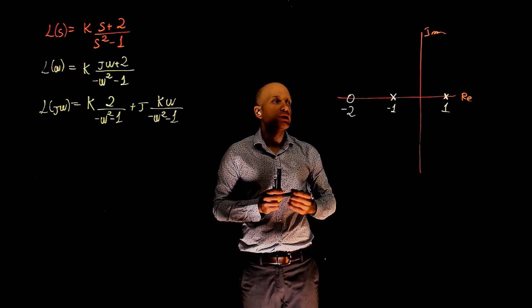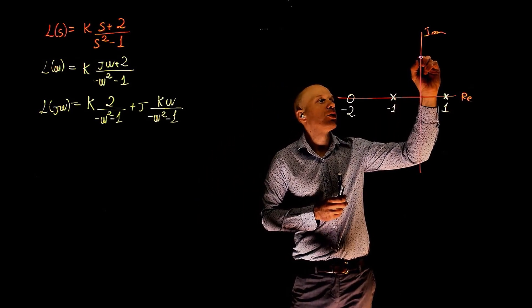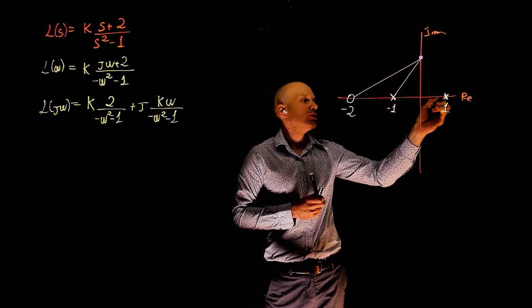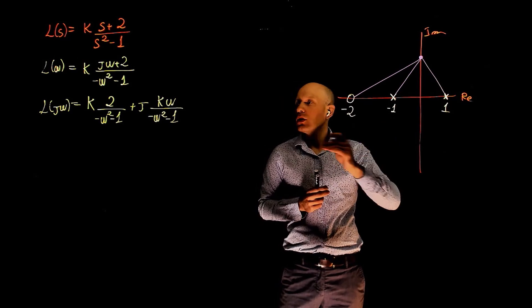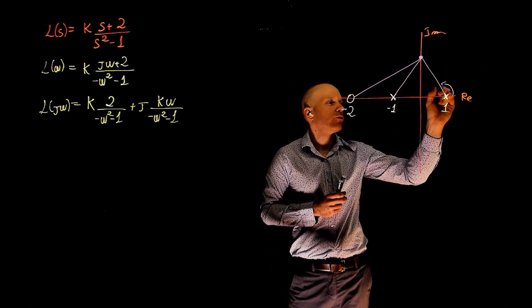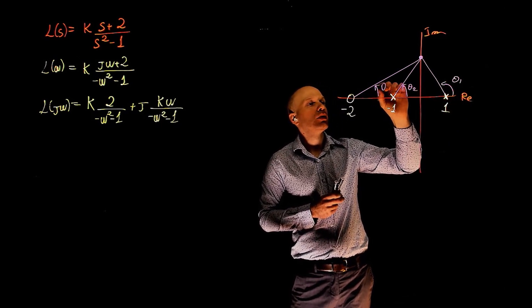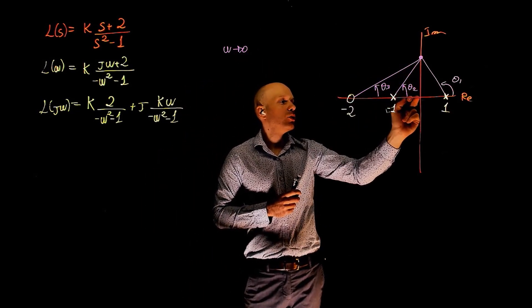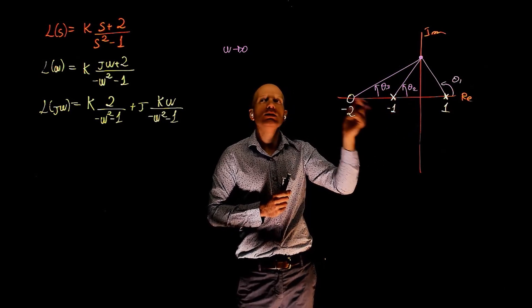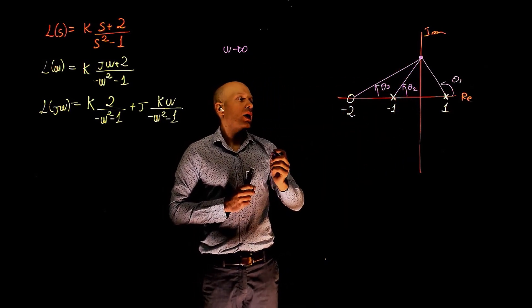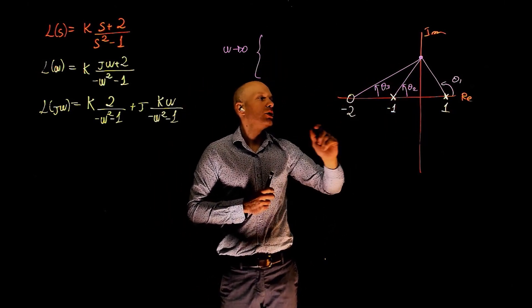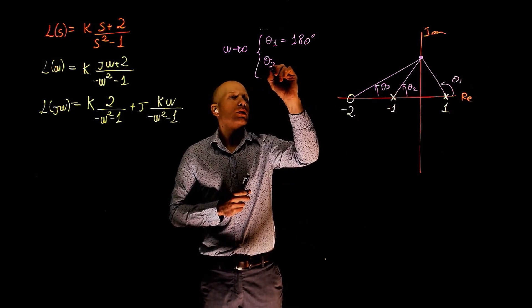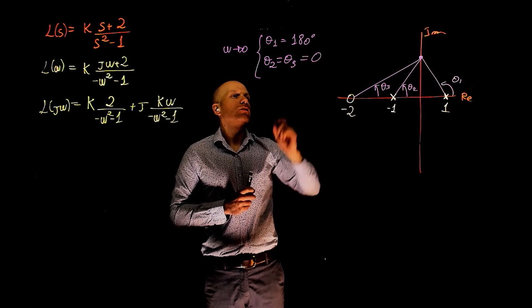The poles and zero are placed. We can now place the point of interest on the imaginary axis and trace all the reference lines from poles and zeros to that point. We can now start by sending this point to zero. We label the angle from the zero as θ₃, the angle from the pole at −1 as θ₂, and the angle from the pole at +1 as θ₁. When ω tends to zero, this point goes to zero on the frequency axis. θ₁ becomes 180°, and θ₂ equals θ₃, both equal to zero.